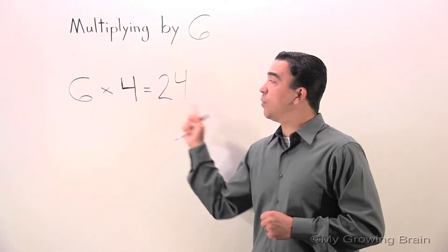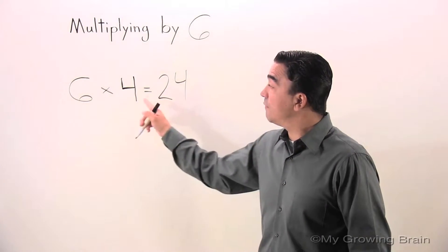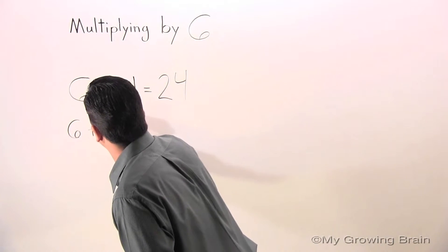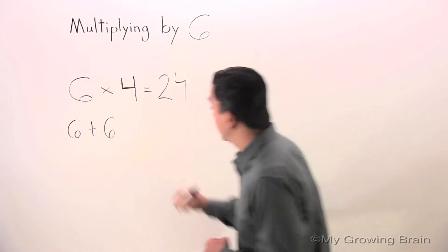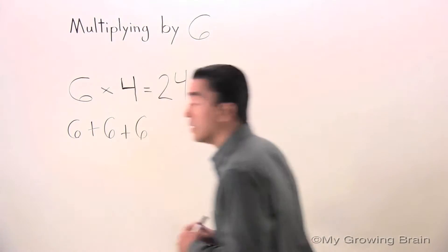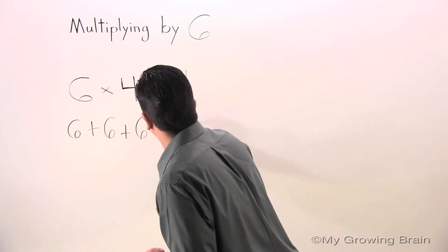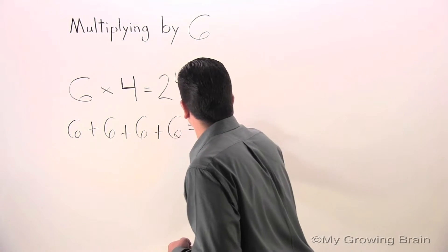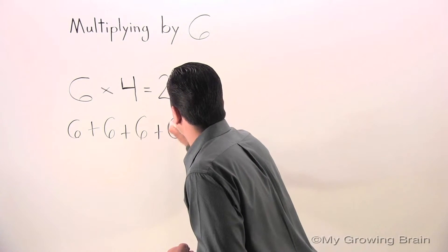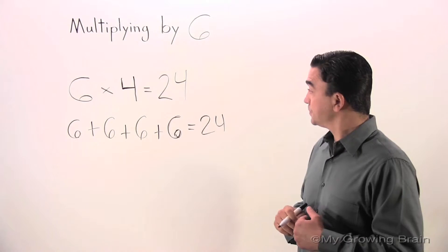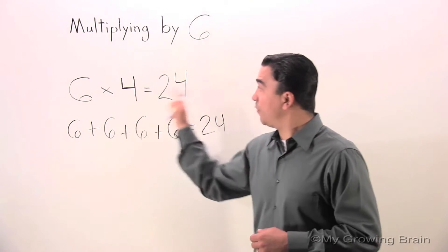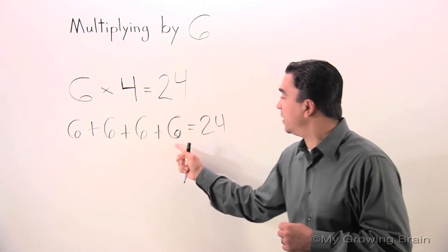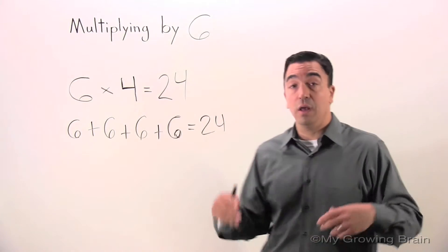If we know that 6 times 4 is equal to 24, then we also know that 4 sixes is equal to 24. 6 plus 6, plus 6, plus 6, plus 6 equals 24. So we know that 6 times 4 equals 24 by memorization, and we also know that 6 plus 6 plus 6 plus 6 equals 24 conceptually.